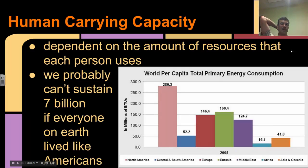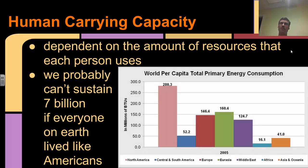The human carrying capacity is dependent upon the amount of resources that each person uses. No one really knows what the human carrying capacity is. It's estimated it could be as high as maybe 20 billion if everyone lives with minimal resource consumption, like those in low socioeconomic conditions without many amenities. If we all lived like people in the United States, we probably couldn't sustain a very high population - maybe 5 or 6 billion. Most people believe the human population is going to peak somewhere around 9 billion, based on the decrease in the growth rate and other factors. Thanks for watching, and I'll see you next time.